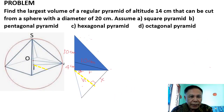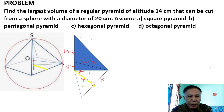Find the largest volume of a regular pyramid of altitude 14 centimeters that can be cut from a sphere with a diameter of 20 centimeters. Assume a square pyramid.